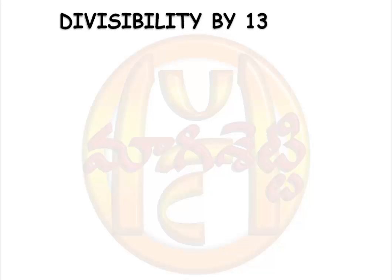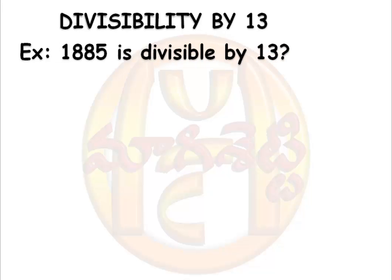Divisibility by 13. We check if a given number is divisible by 13 or not. For example, we take 1885 and check whether it is divisible by 13 or not.